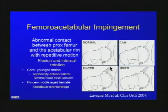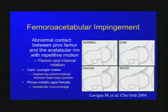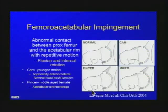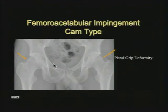The other type of FAI is pincer impingement — overgrowth of the anterior acetabulum from a deep hip like protrusio acetabuli or retroversion of the acetabulum. With a normal femur, this hits prematurely especially with adduction and internal rotation. Most people actually have a mixture of cam and pincer impingement.